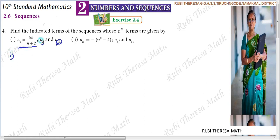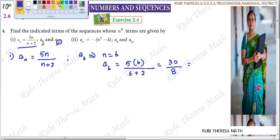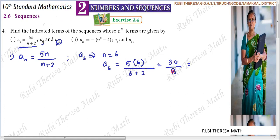First subdivision: we have to find a6. The general term is a(n) equals 5n divided by (n plus 2). Here we find a6, which means n equals 6. So a6 equals 5 into 6 divided by (6 plus 2), which is 30 divided by 8. Simplifying, 15 by 4 is the 6th term of this particular sequence.